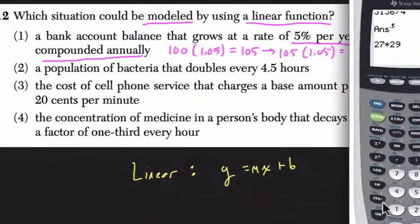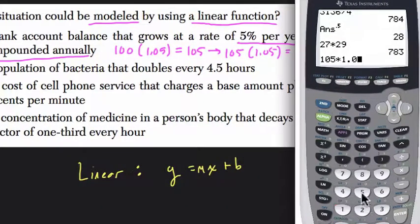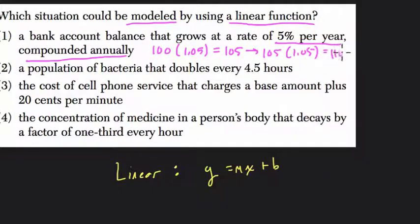And if we think about what that is, we have 105 times 1.05. Now it's 110.25. So, even without getting too much into this idea of equations and compounding, we notice something here. In the first year, it increased by $5 to 105. Then it increased by $5.25 the next year, which means it's not linear. The rate of change is changing, because the amount of money we have in the bank is growing differently each time. So that's out.